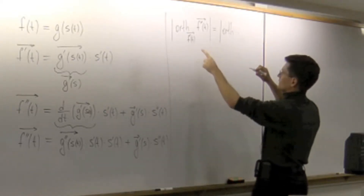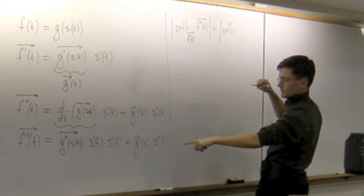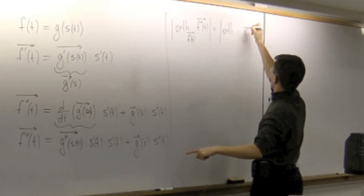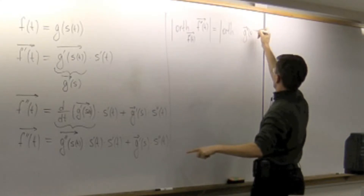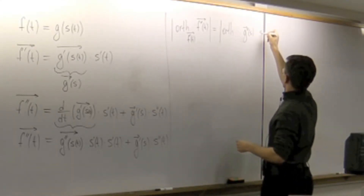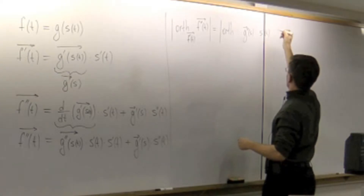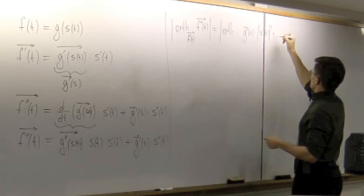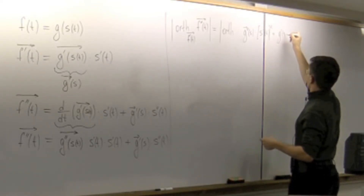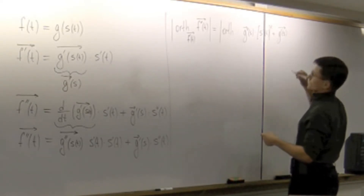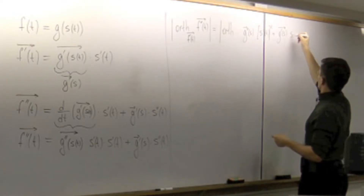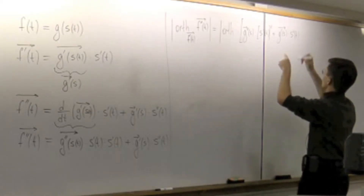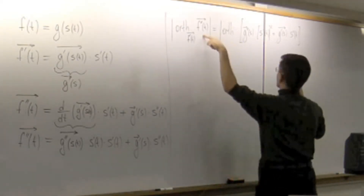Let me just do the conversion. The second derivative is converted like that: it is g double prime of s multiplied by s prime of t, which is squared, plus g prime of s — and that's a vector again — multiplied by s double prime of t. So this is the old acceleration vector.